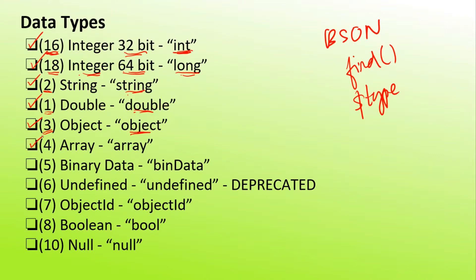The next data type is array. The assigned number is 4 and the alias is 'array'. Then we have the binary data type with assigned number 5, and alias 'binData'. The next is the undefined data type with assigned number 6 and alias 'undefined'. This data type has been deprecated and in the next versions it might be completely removed, so using it should be done with caution.